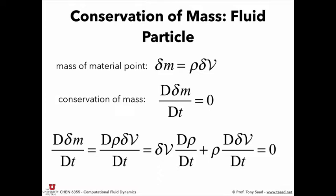We left off with this specific derivation: doing the conservation of mass for a fluid particle. You don't see this form often in textbooks, so I thought it would be nice for you to see it. I'm just going to go through it very quickly. The idea of conservation of mass is that the mass of a material point or a fluid particle does not change with time. So the rate of change — the material derivative of the mass of the fluid particle — is zero.